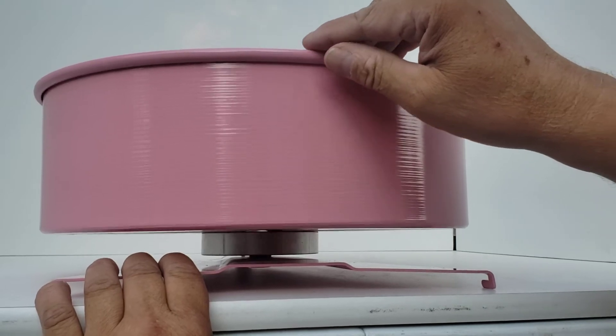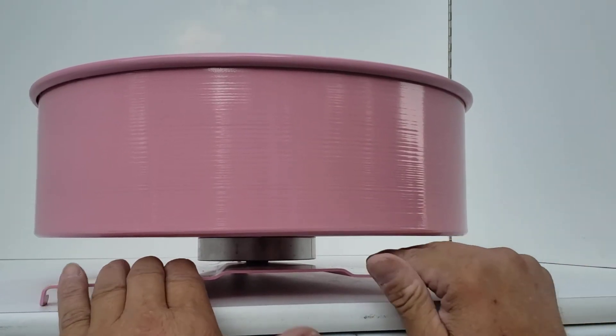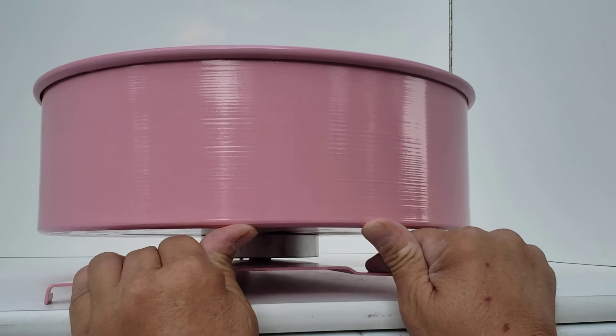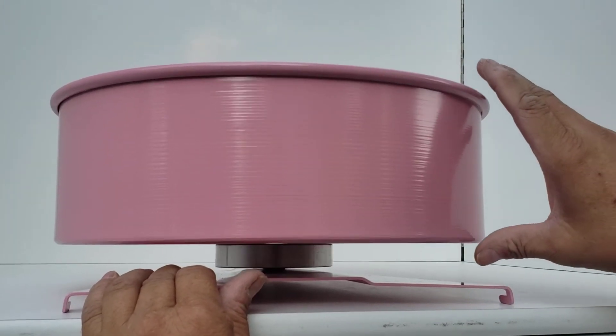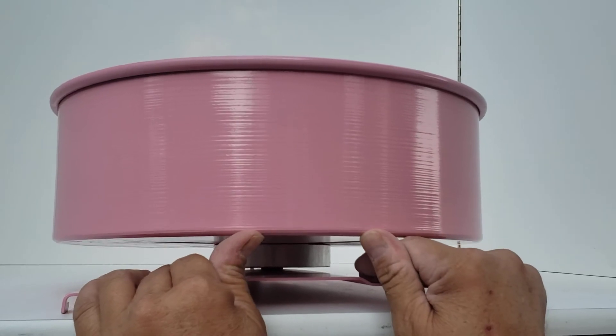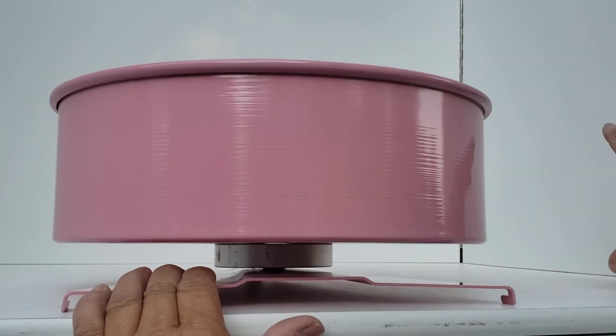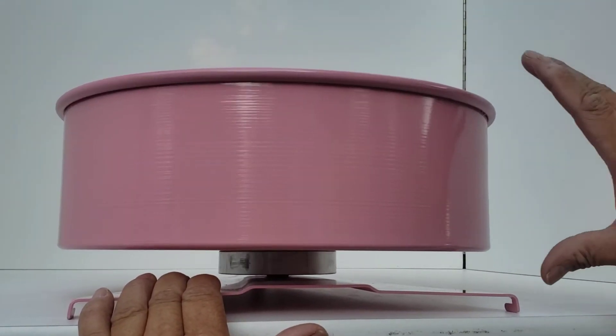What you want to do is stop it at a low spot and just gently push it up, and then spin it until you find another low spot. Push it up until it spins true.